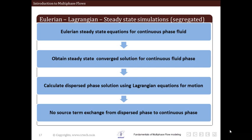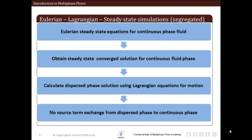The next algorithm is for steady-state simulations using a segregated approach. Segregated means we solve the continuous phase equations and the dispersed phase equations separately — not simultaneously. This is suitable for problems where the effect of the dispersed phase on the continuous phase is very low, so we do not need two-way coupling. We can just model the continuous phase and its effect on the dispersed phase, without feeding source terms back.